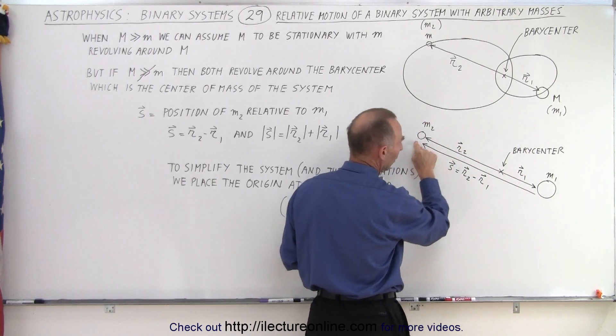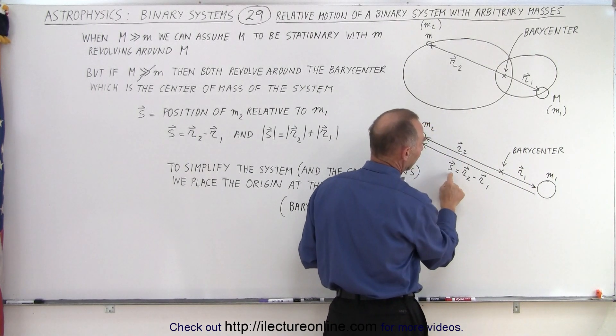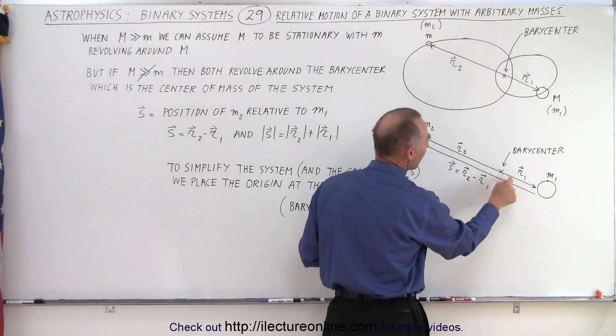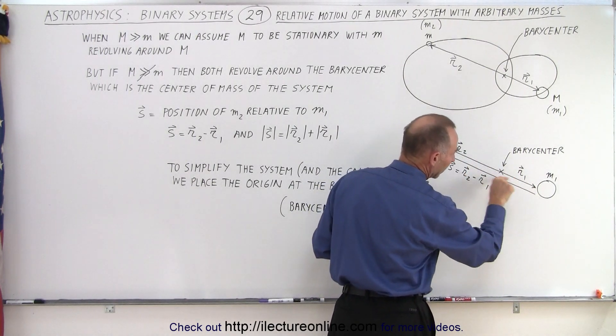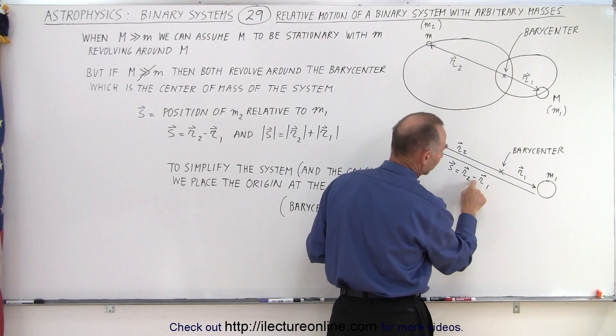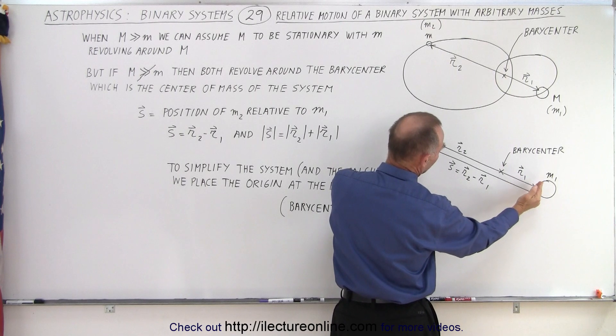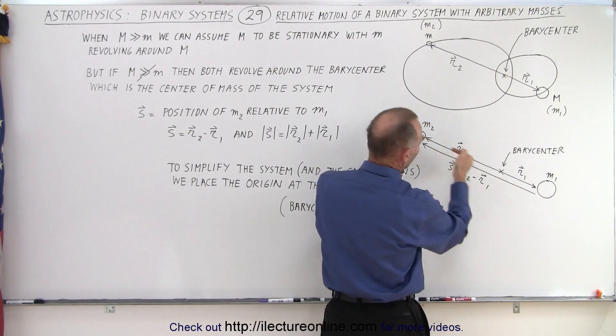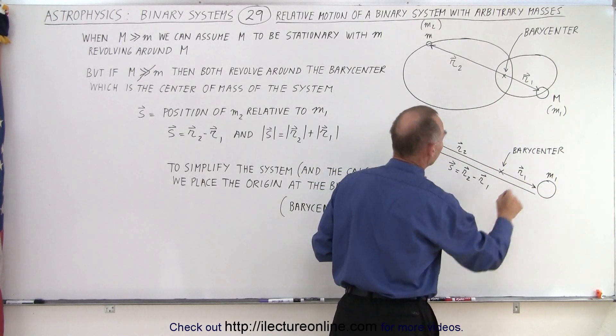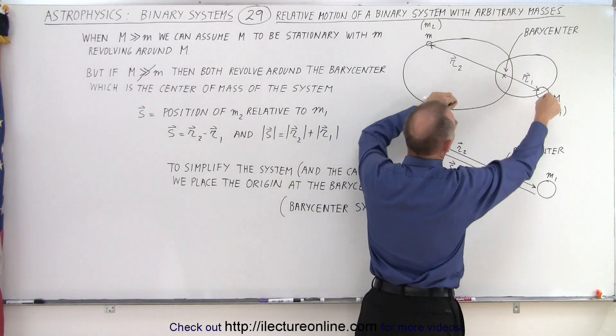And you can see then that that would be equal to R2 minus R1, since R1 is pointing in the opposite direction. When we subtract R1, essentially that turns it around. That gives us a total distance from there to there, and the direction from the large object to the small object, as they both go around the barycenter.